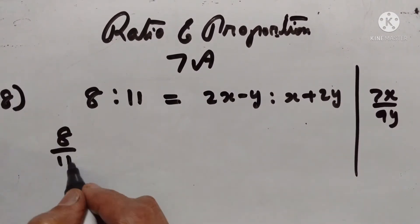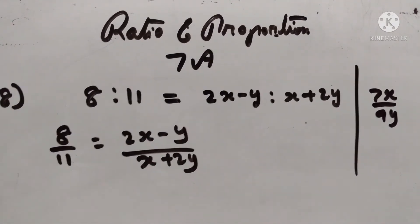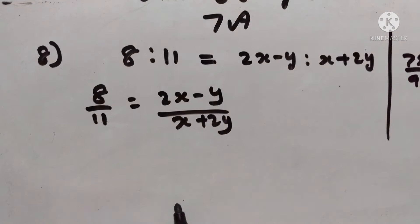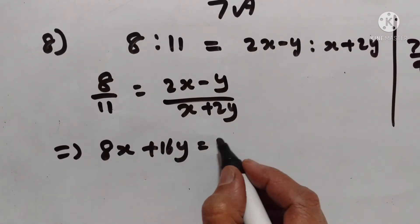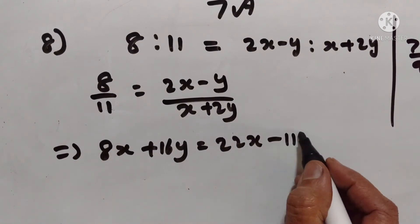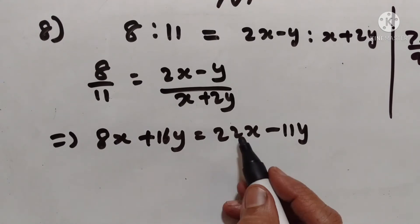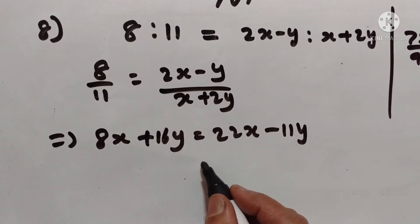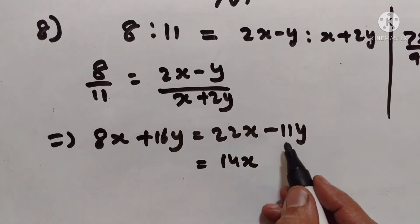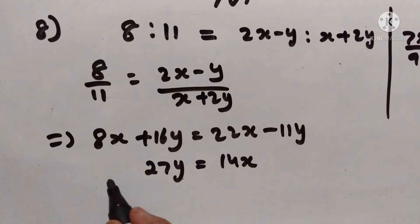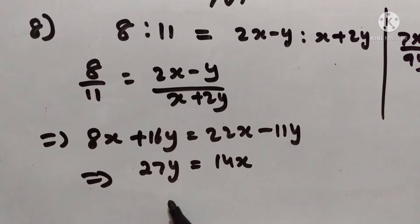8 upon 11 is equal to 2x minus y upon x plus 2y. Let us cross multiply them. 8x plus 16y is equal to 22x minus 11y. 22x minus 8x is equal to 14x. 16y plus 11y is equal to 27y. So x upon y is equal to 27 upon 14.